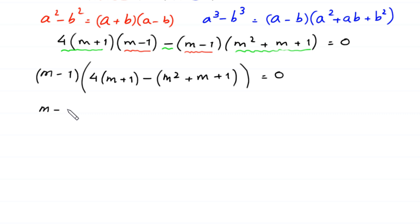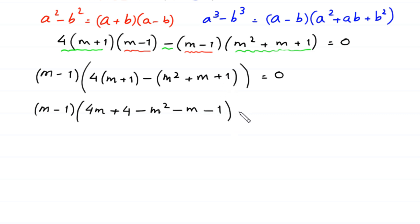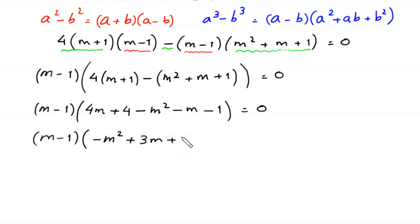We can see that (m−1) is a common factor in both terms, so we factor it out. The equation becomes (m−1) times [4(m+1) minus (m²+m+1)] equals 0. Expanding the bracket: 4m+4 minus m²−m−1 equals negative m²+3m+3. So the equation is (m−1)(−m²+3m+3) equals 0.